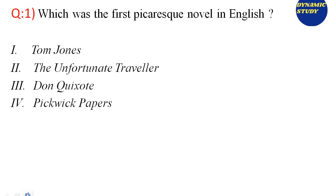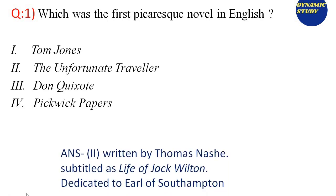First question: Which was the first picaresque novel in English? Option 1, Tom Jones. Option 2, The Unfortunate Traveler. Option 3, Don Quixote. Option 4, Pickwick Papers. Tom Jones is the most famous novel by Henry Fielding. The Unfortunate Traveler is written by Thomas Nash. Don Quixote is a Spanish picaresque novel by Miguel Cervantes. And Pickwick Papers is by Charles Dickens. The answer is option number 2, The Unfortunate Traveler.